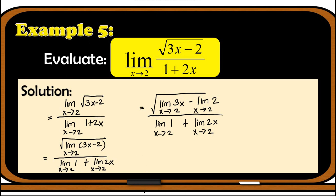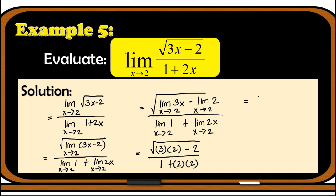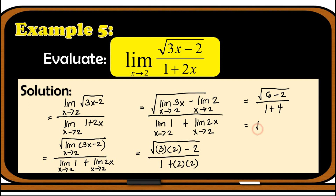We now evaluate the limit of each term. For the numerator: the square root of the limit of 3x as x approaches 2 is 3 times 2, minus the limit of the constant 2, which is 2. For the denominator: the limit of 1 is 1, and the limit of 2x is 2 times 2. Simplifying: numerator becomes the square root of 6 minus 2 over 1 plus 4, which is the square root of 4 over 5.